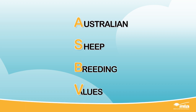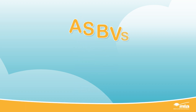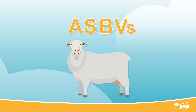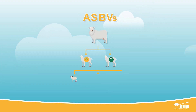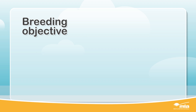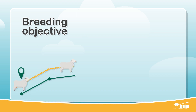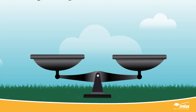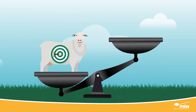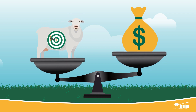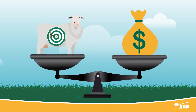Australian sheep breeding values, or ASBVs, are the best prediction of an animal's genetic merit for a particular trait and an indication of how an animal's progeny will perform. We also know that your breeding objective identifies where you want to take your flock and the traits that will help you achieve this. But it can be challenging to balance and prioritise the traits identified in the breeding objective to meet the demands of your target market and production goals.